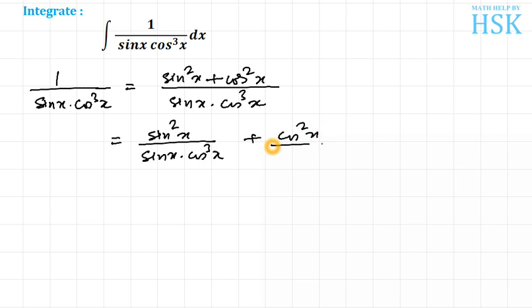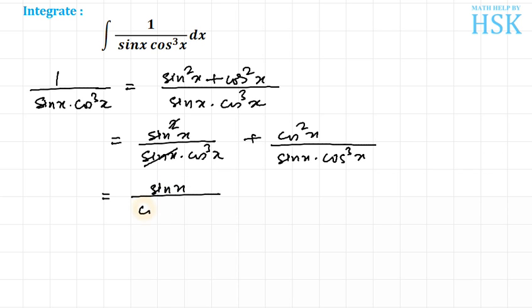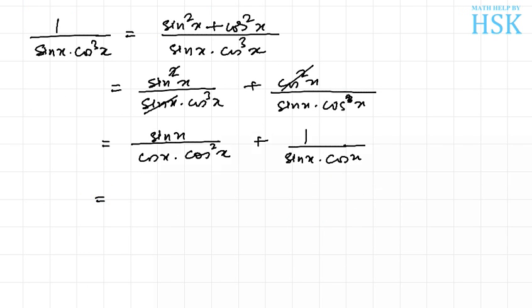This sin and sin cancels out and I get sin x upon cos cube x. This can be written as sin x upon cos x into cos square x. Here the cos square cancels out and in the denominator we have cos cube, so we are left with 1 upon cos x only, giving us 1 upon sin x into cos x.